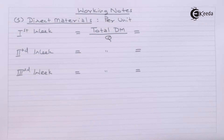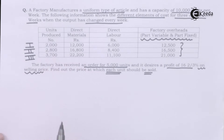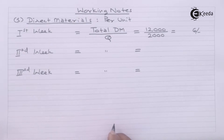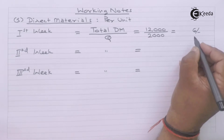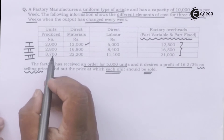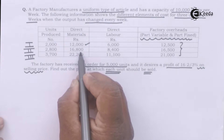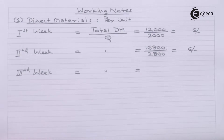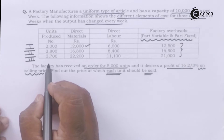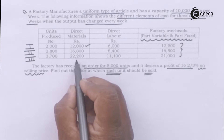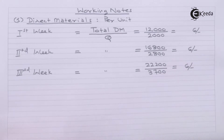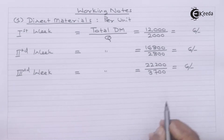First, we will find direct material per unit. Units produced in the first week were 2,000 and total direct material cost was ₹12,000, so per unit direct material cost is ₹6. In the second week, units produced were 2,800 and material cost was ₹16,800, so per unit direct material is also ₹6. In the third week, 3,700 units were produced at a cost of ₹22,200, so per unit direct material is again ₹6.